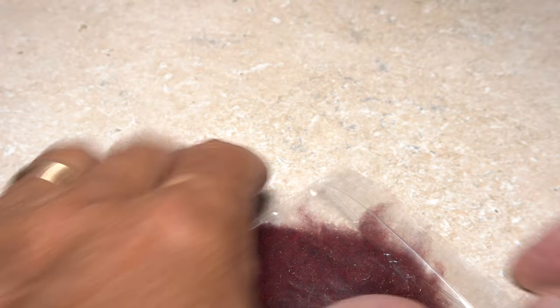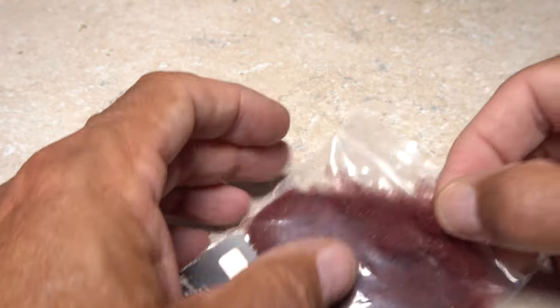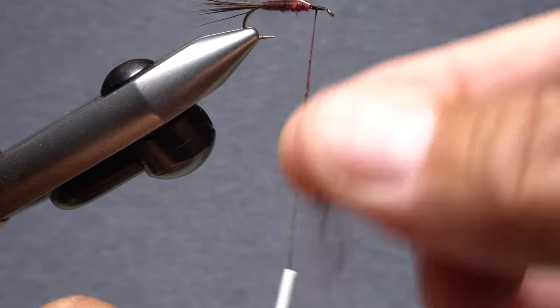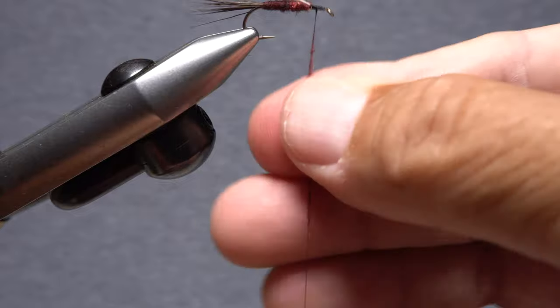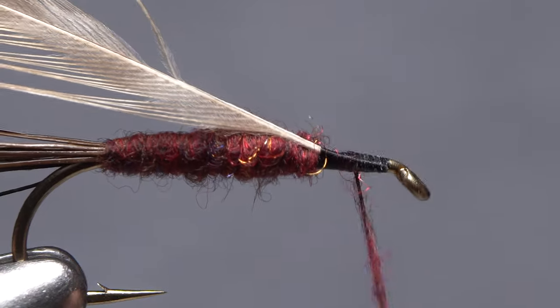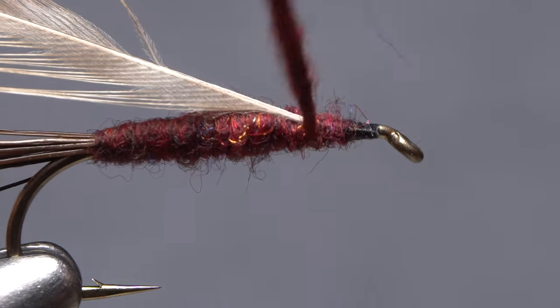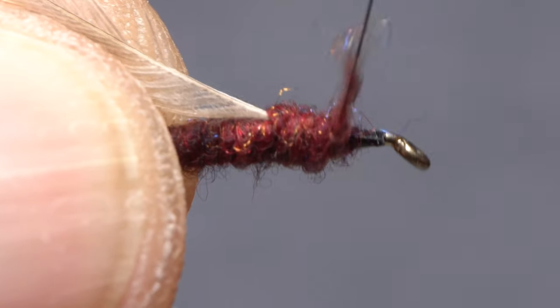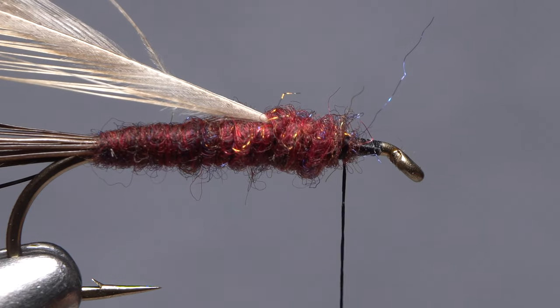Go back to the Isonychia dubbing and pluck just a small amount from the packet. Use it to once again create a very slender noodle on your tying thread, but this time just a little more than an inch in length. Take wraps with the noodle to build up a slightly bulbous thorax on the fly. End with bare tying thread a full hook eye length back from the back edge of the hook eye.